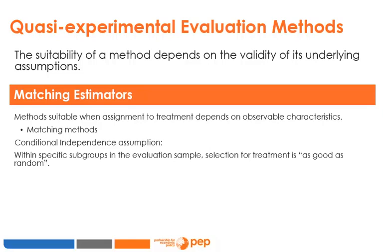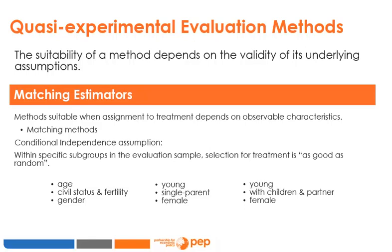For example, if I split my evaluation sample according to age, civil status, fertility, and gender, matching assumes all individuals within the groups created by these characteristics have the same probability of receiving the treatment. All young single-parent females are assumed to be similar, and among their similarities they all have the same likelihood of benefiting from the program. Selection on observables implies that there is no unobservable selection within each subgroup created by the matching variables — there is no selection bias given the observable characteristics X. This is the assumption of conditional independence.